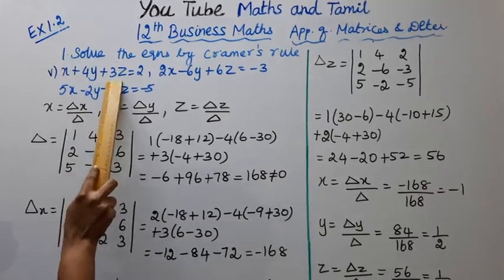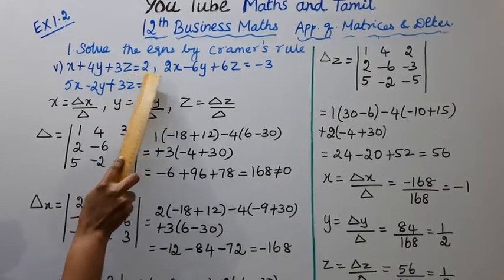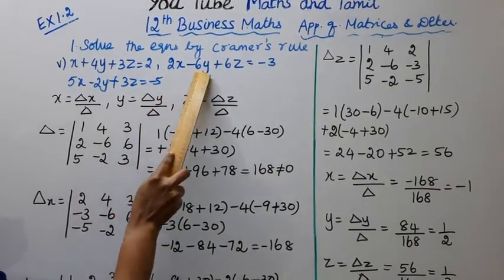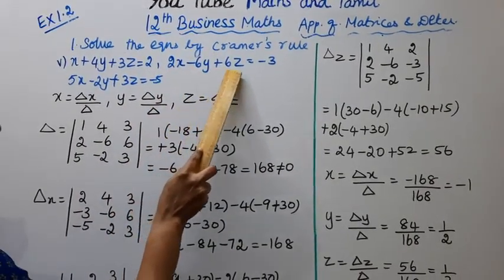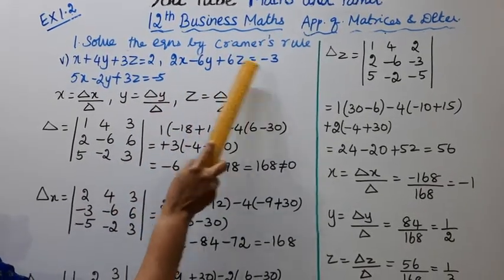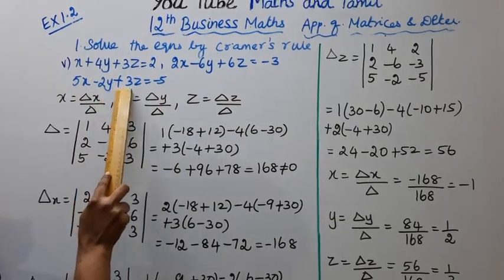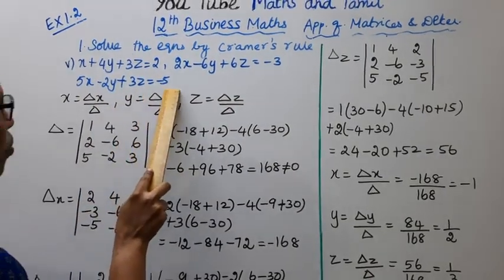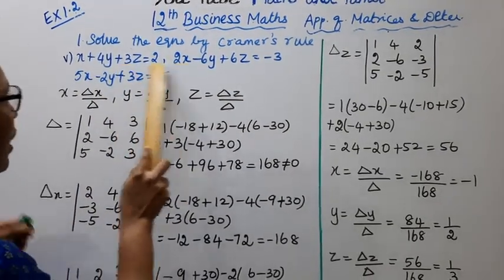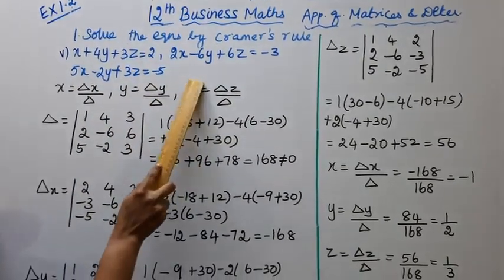x plus 4y plus 3z equal to 2; 2x minus 6y plus 6z equal to minus 3; 5x minus 2y plus 3z equal to minus 5. These are the three equations.